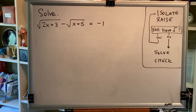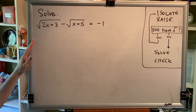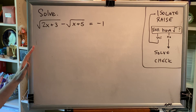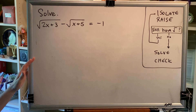The topic of this video is solving radical equations. Let's look at a problem: solve the principal square root of the sum 2x plus 3 minus the principal square root of the sum x plus 5 equals negative 1.